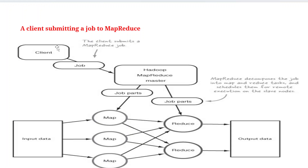Next, how a client submits a job to MapReduce: the client submits a job to the Hadoop cluster. The master node is responsible for distributing the jobs to the mapper nodes and reducer nodes, along with the input text files or input data. The mapper function decomposes the given text files into tuples, which are sent to the reduce function. The reducer combines all the outputs, aggregates, and summarizes them to produce the final output data.